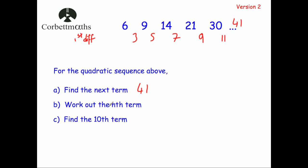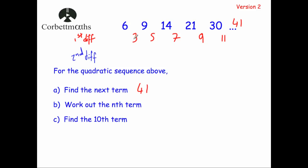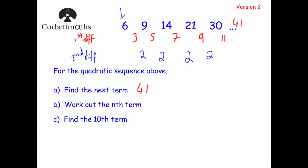Next, work out the nth term. To find the nth term, we're going to work out the second differences. The second differences — that's what you get when you take away the first differences. So the first differences are 3, 5, 7, 9, so the second differences are going up by 2, 2, 2, and 2. So the second differences are 2 each time.